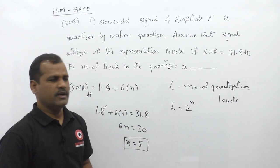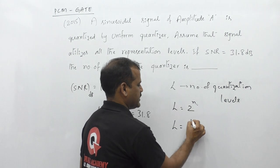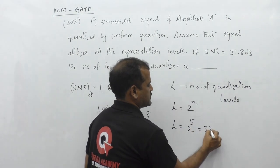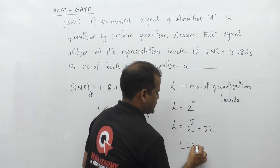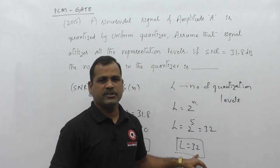With N equal to 5, we can calculate L using the formula 2 to the power of N. That is 2 to the power of 5, which equals 32. Therefore, the number of quantization levels used by this PCM quantizer is 32 representation levels.